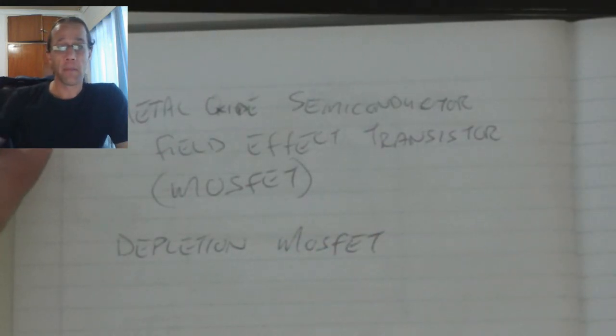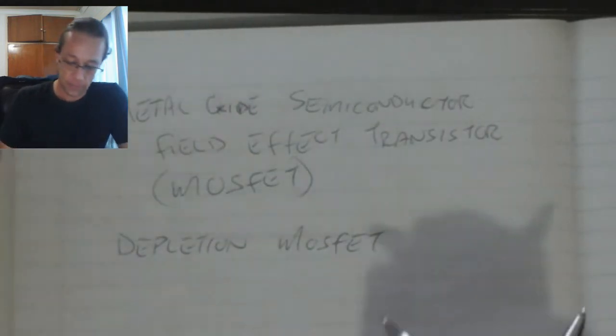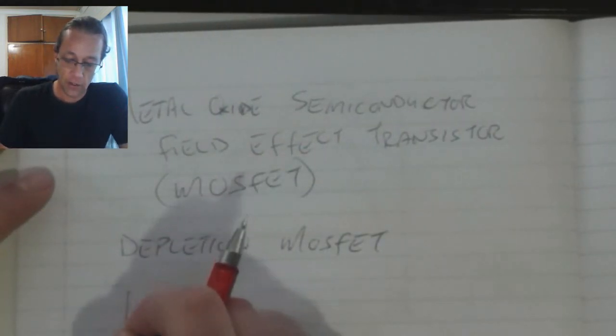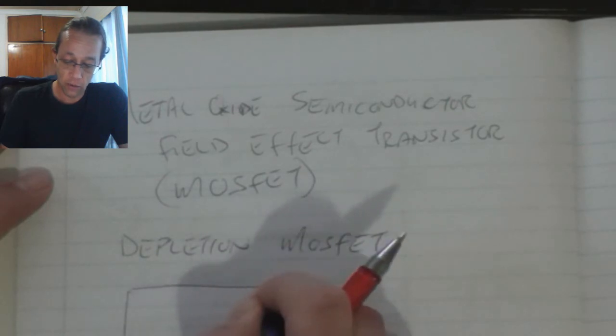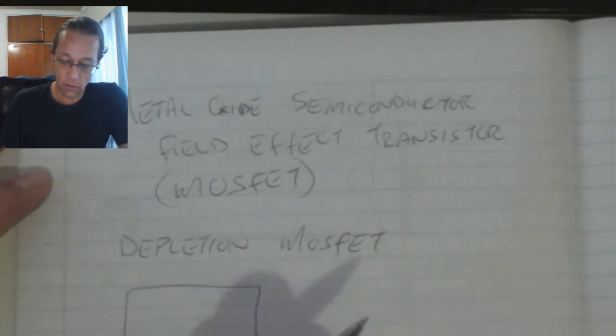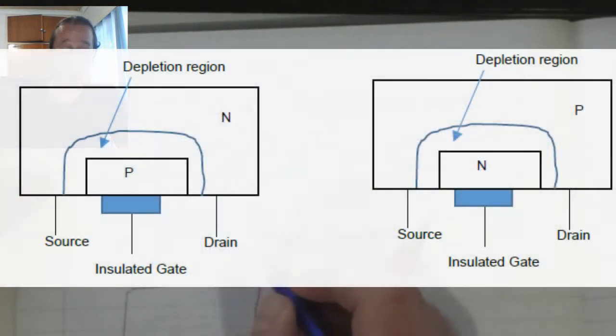The depletion MOSFET operates with a large channel. It comes in an N-NAP type. So in this case it's got a large N-type material to serve as a channel and it has a P-type material.